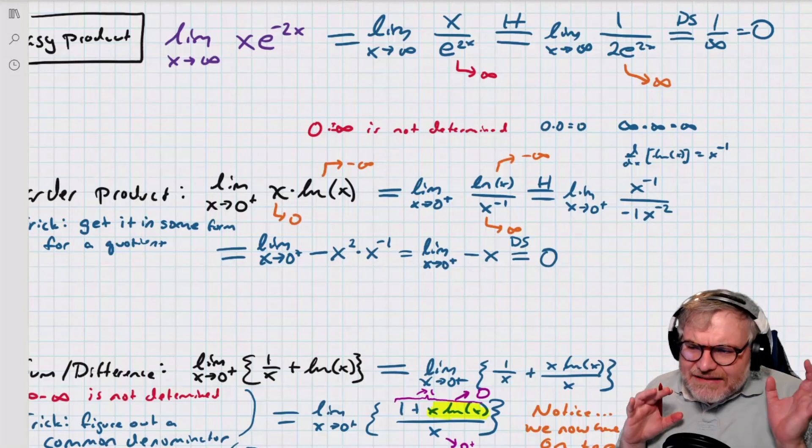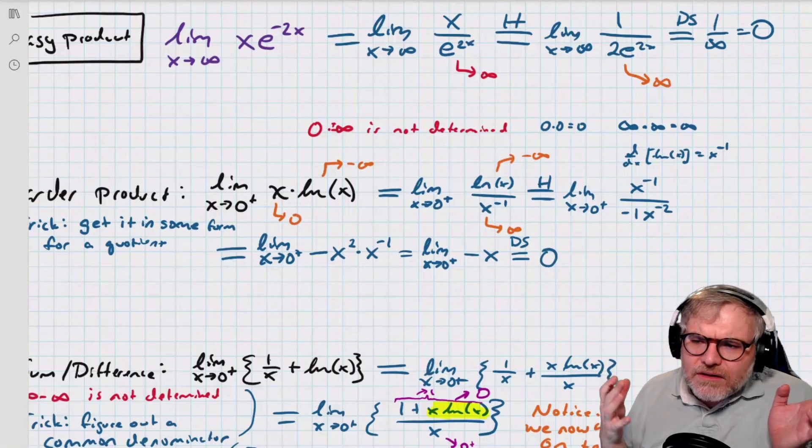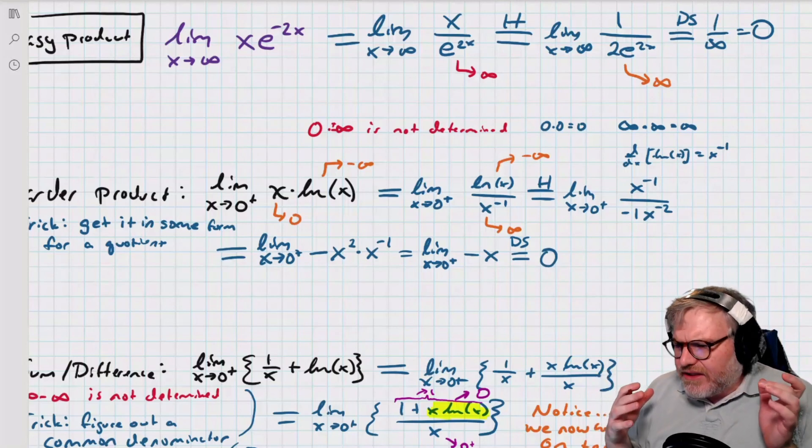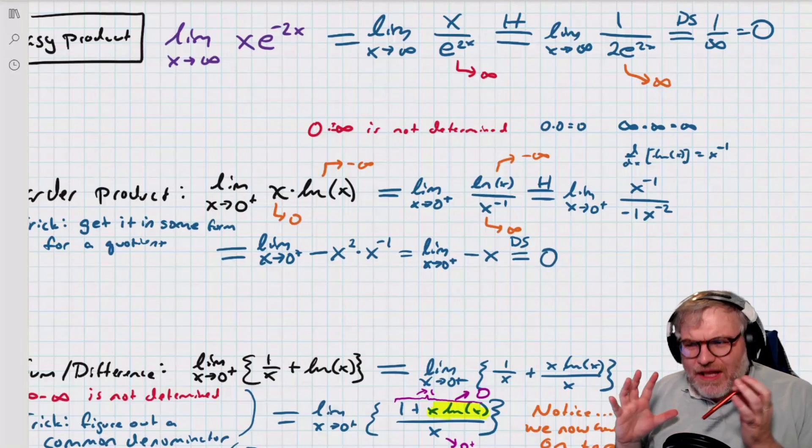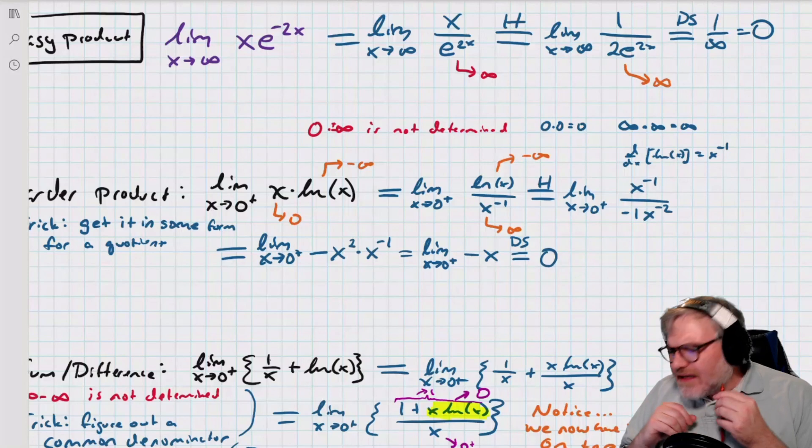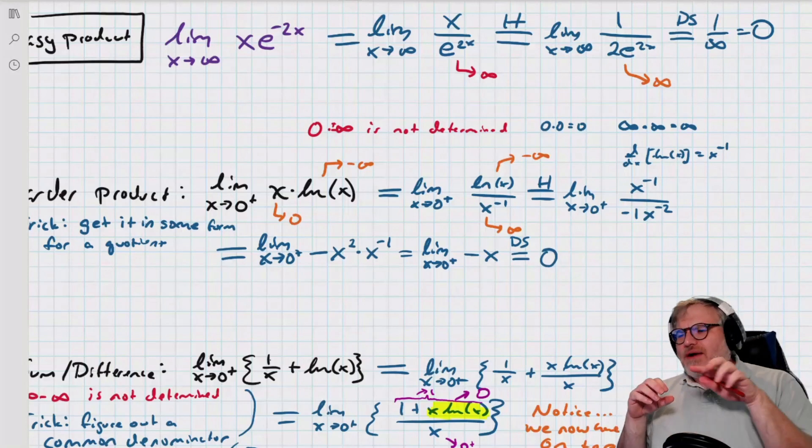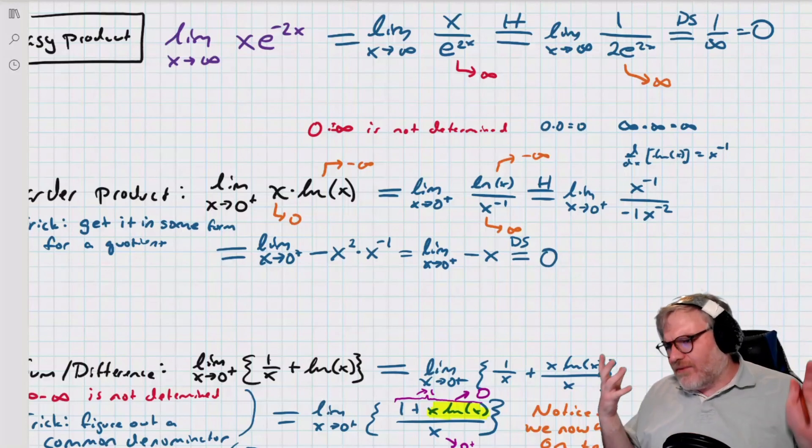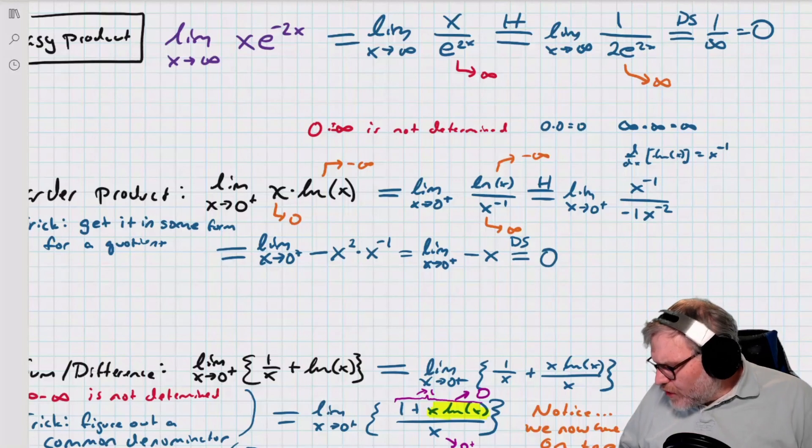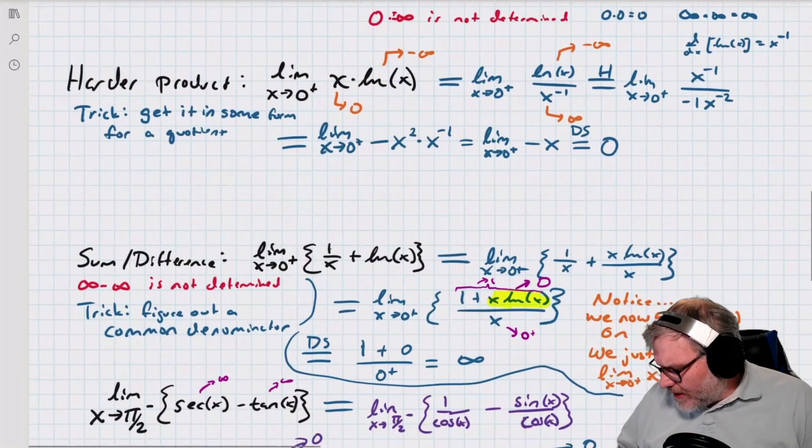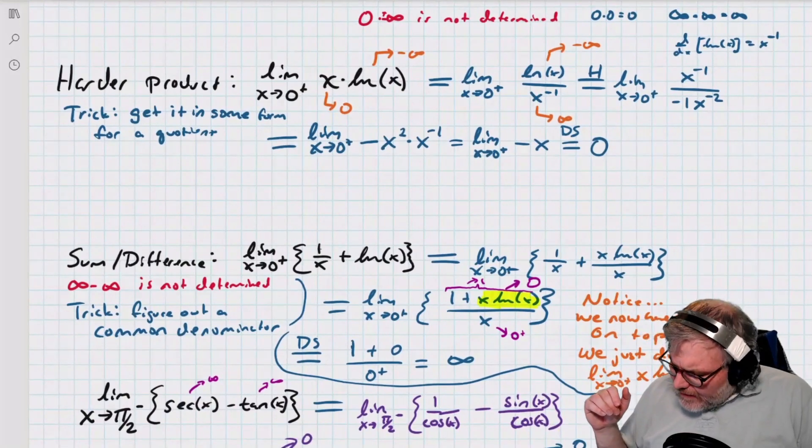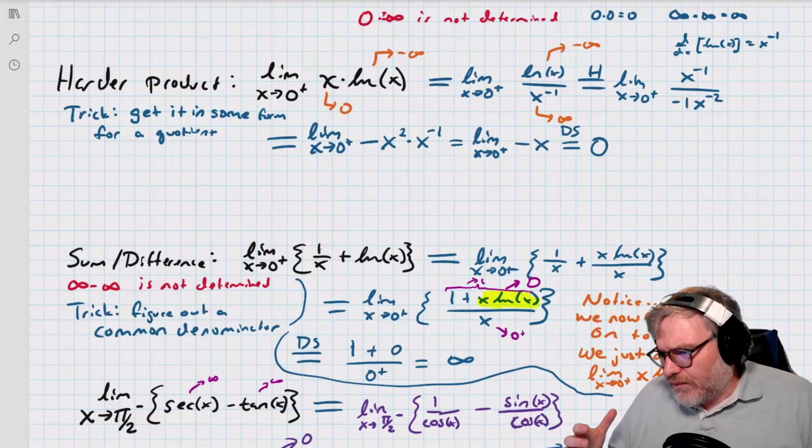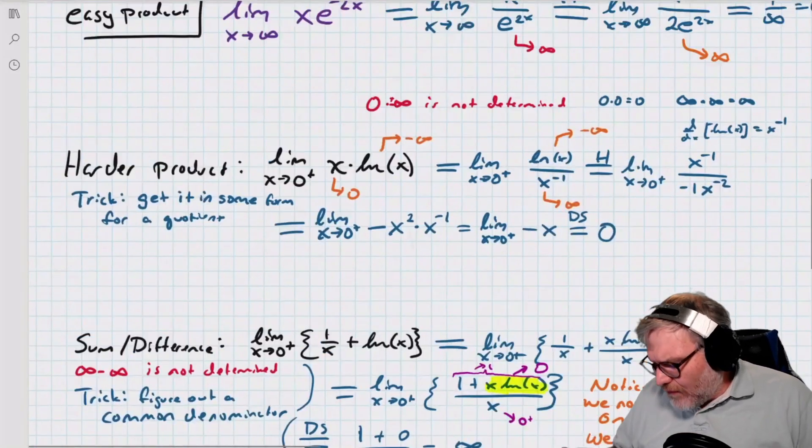So these are the harder products, a little bit too hard. Maybe this one is just borderline whether or not we could put it on the test, because this one you would only have to try. You try one, and it doesn't work. You try the other, and it works. But you can get really long ones, especially with like the tangent and stuff, and you can wind up on a different road.